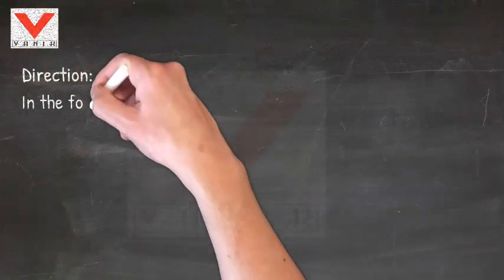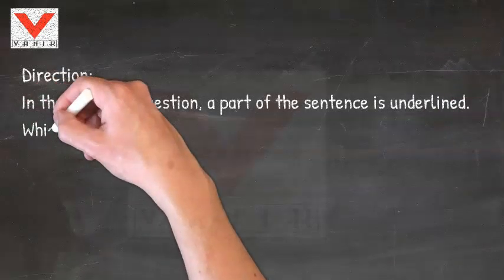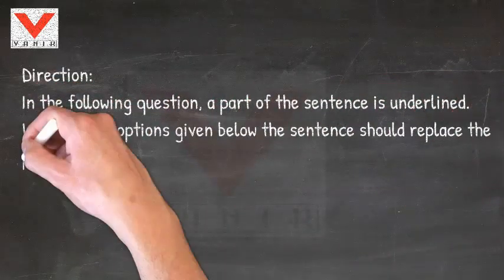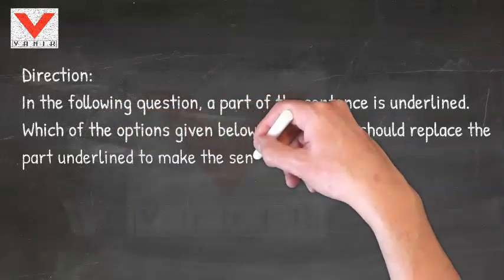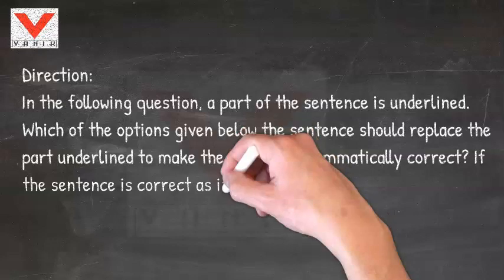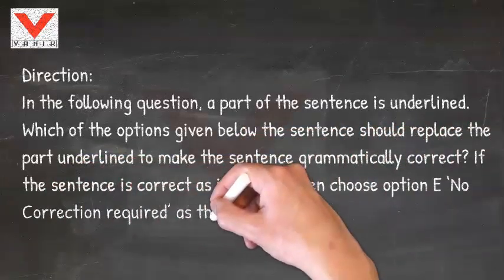Varnak English tips. Direction: In the following question, a part of the sentence is underlined. Which of the options given below the sentence should replace the part underlined to make the sentence grammatically correct? If the sentence is correct as it is given, then choose option E: No correction required as the answer.